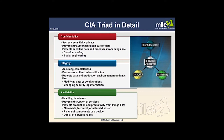Integrity means keeping our information accurate and complete, preventing unauthorized modifications. If we're looking at hospital records, only people who are supposed to modify them should have that access. If a hacker can go in and manipulate health records — saying we have cancer when we don't, or a disease we don't have — that's a serious problem. We wish to protect our information from being changed by those not authorized to change it.